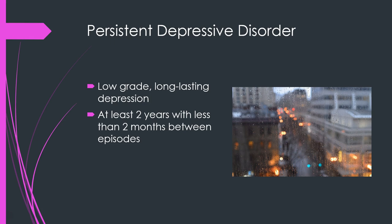Persistent depressive disorder is a low-grade, long-lasting depression lasting at least two years with less than two months between episodes, sometimes at subclinical levels — like a slow drizzle that just keeps going.